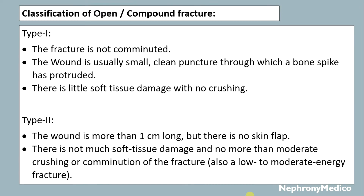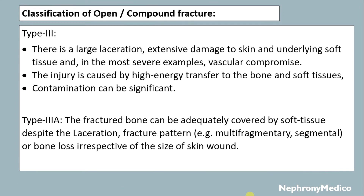In Type 2, there is no more than moderate crushing or contamination of the fracture, and it is a low to moderate energy fracture. Type 3 fracture: there is a large laceration, extensive damage to skin and underlying soft tissue, and in the most severe examples, vascular compromise. The injury is caused by high energy transfer to the bone and soft tissues, and contamination can be significant.